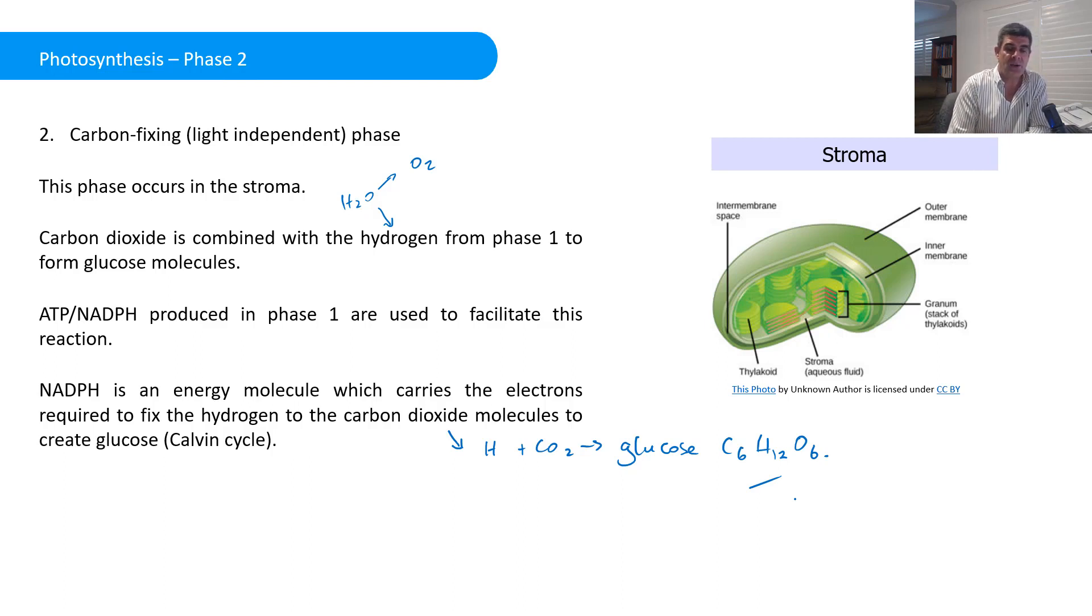The important thing is to understand that the way that the chloroplasts are structured is that there are distinct regions. The grana and the stroma are the two that we kind of focus on as the two distinct regions that we notice when we look at chloroplasts. We notice that the grana themselves are made up of these individual little stacks of thylakoids. This is where the concentration of the chloroplasts is. It's where the first stage or the first phase occurs. Then we have that transfer of hydrogen and energy and electrons into the stroma for this second phase.